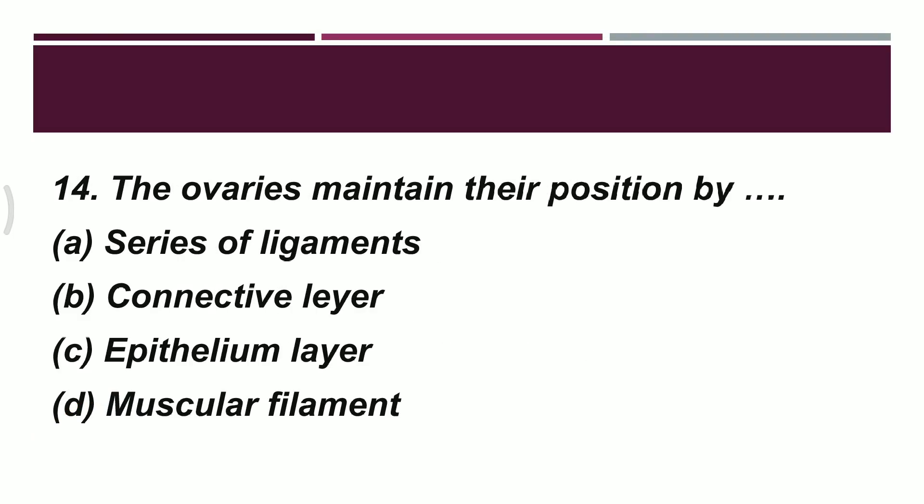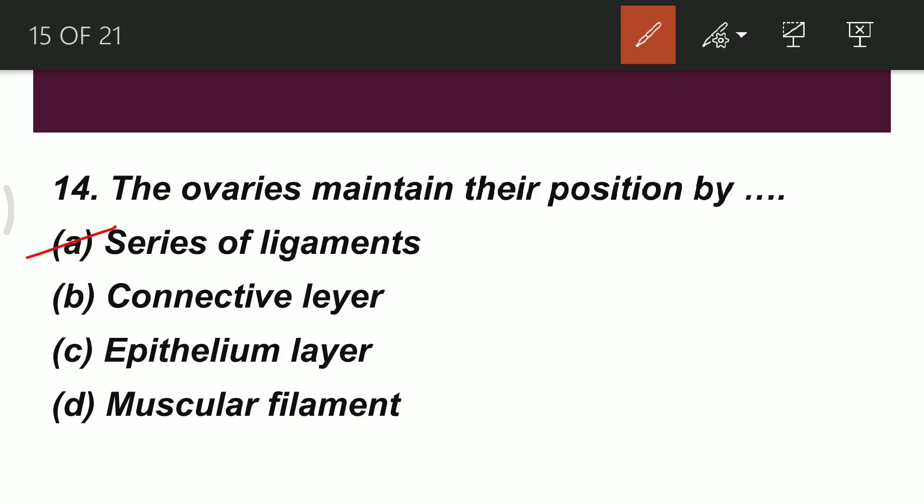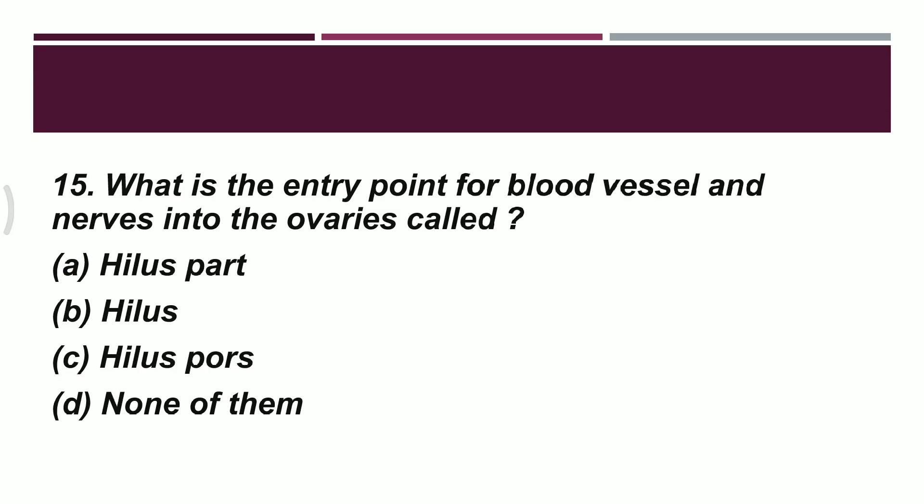Question 14: how do the ovaries maintain their position? Option A: series of ligaments. Option B: connective layer. Option C: epithelial layer. Option D: muscular filament. The correct answer is A — a series of ligaments. These ligaments connect the ovaries to the fallopian tube and maintain the position of the ovaries.